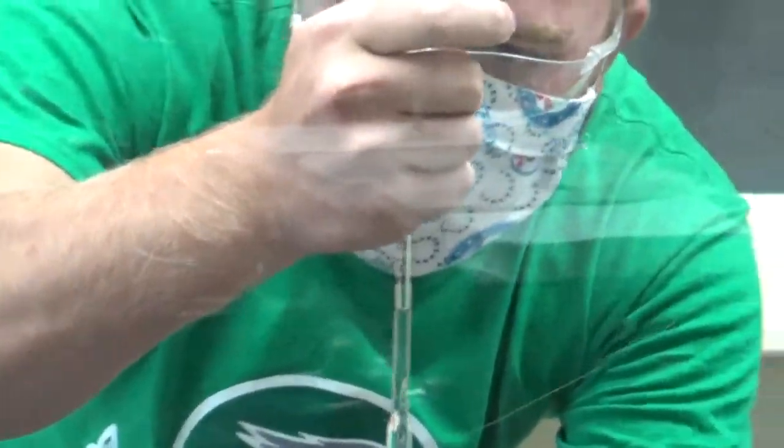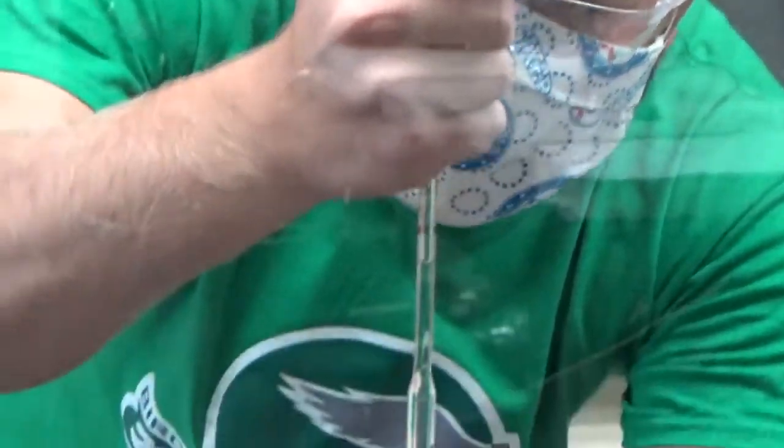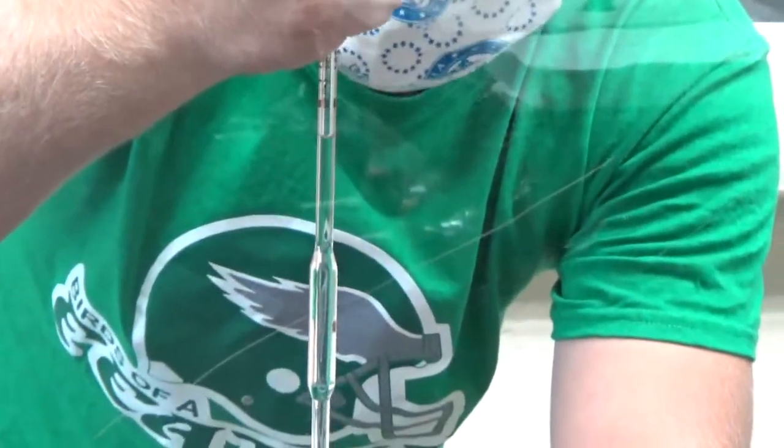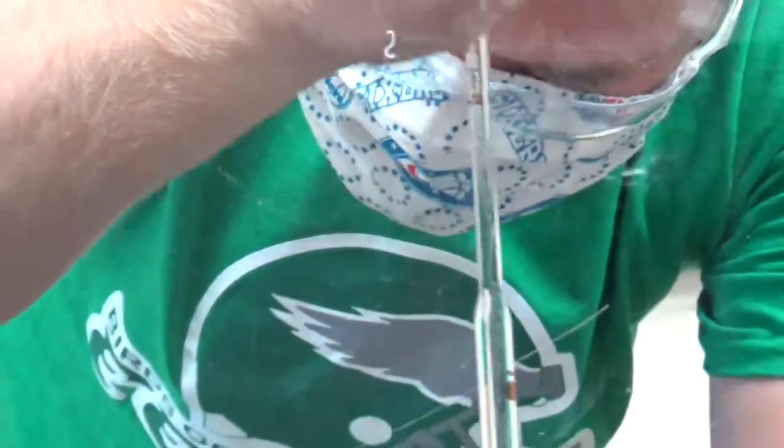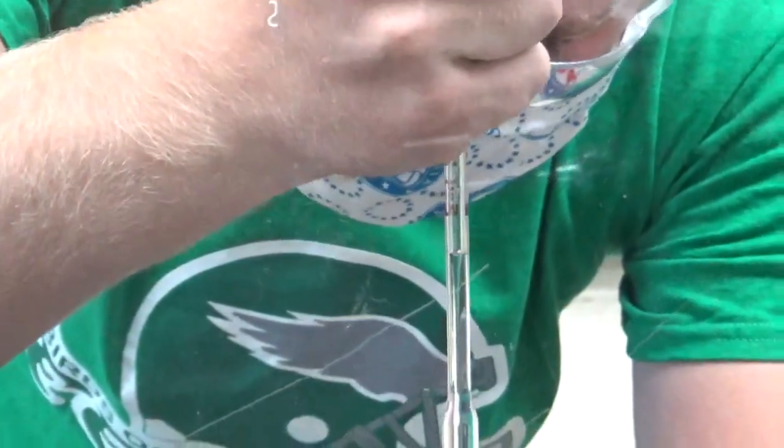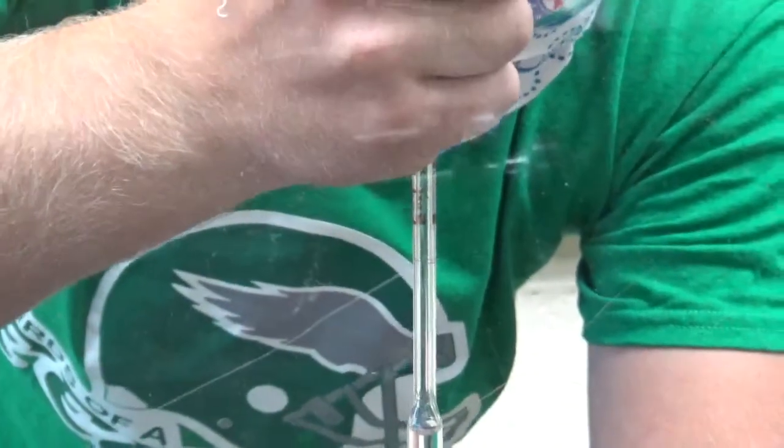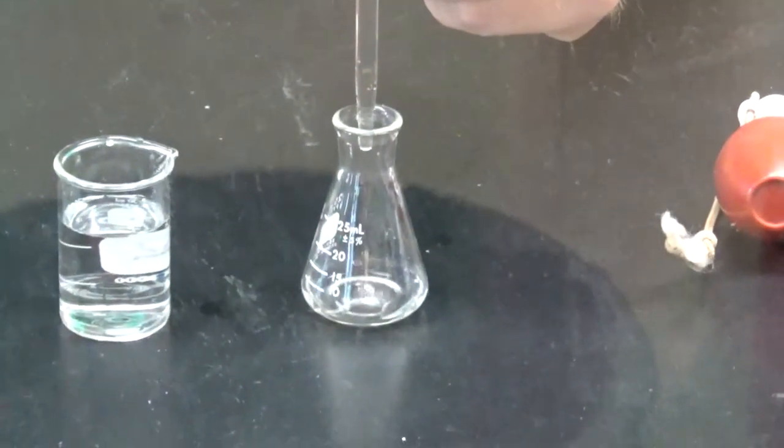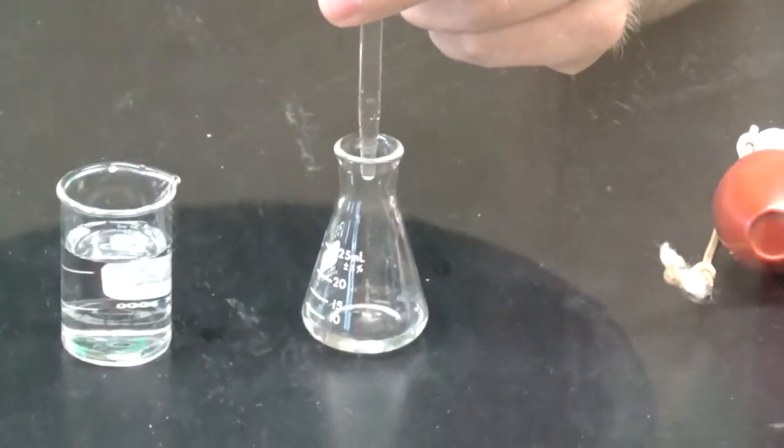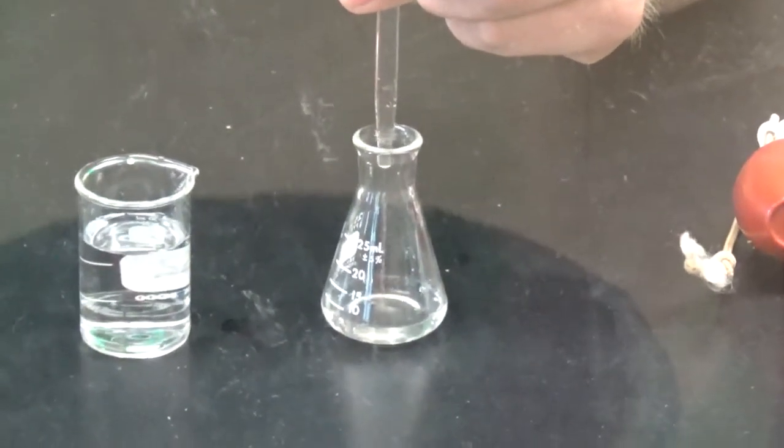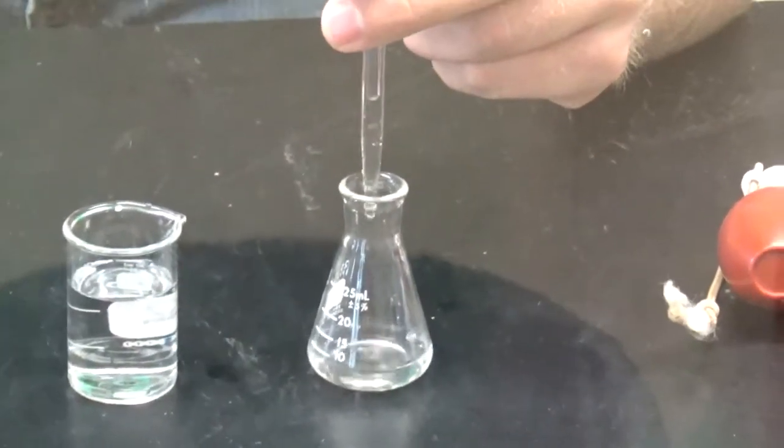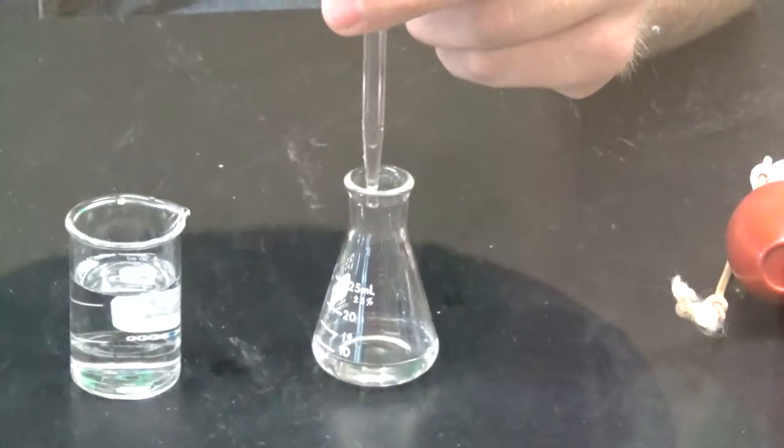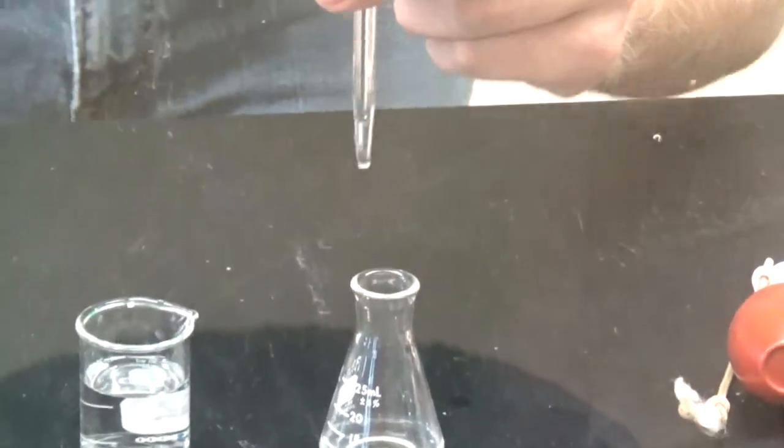You draw the liquid up past that mark and now you try to get the meniscus on that mark. Oh wow, you did it, you got it right the first time. Cool. Now he's dispensing that into an Erlenmeyer flask, which is what you'll do. You'll weigh an Erlenmeyer flask dry and empty and pipette into it. Now he's going to demonstrate how to get that last drop out by touching it to the side of the glass.